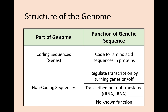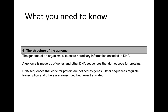So this is the main part of this key area — in fact, the only part really. You need to know what the genome is, and you need to know the differences between the coding sequences and the non-coding sequences. I've made this slide to summarize it: if you're a coding sequence, you're a gene and you code for proteins. If you're a non-coding sequence, you either regulate transcription, are transcribed but not translated, or you have no known function. And that's all you need for Key Area 5, structure of the genome.